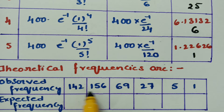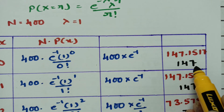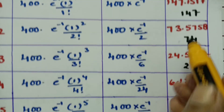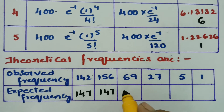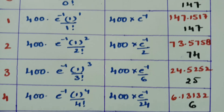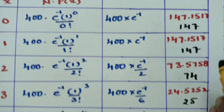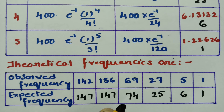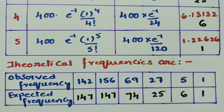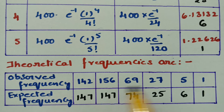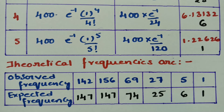So the theoretical (expected) frequencies are 147, 147, 74, 25, 6, and 1. The observed frequencies from the question are 142, 156, 69, 27, 5, and 1. These are the observed frequencies and these are the expected frequencies — this is how we solve the problem.